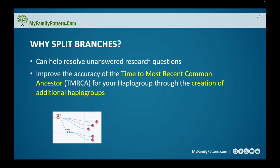This improvement will show up in a couple of ways. It will make our time to most recent common ancestor more accurate, because when we increase the sample size of testers within a haplogroup, our results become more refined. Also, the more testers we get helps remove private variants. If we get somebody to test who has that same mutation or private variant, that will create new haplogroups — and that additional information can help us answer research questions we never thought possible.